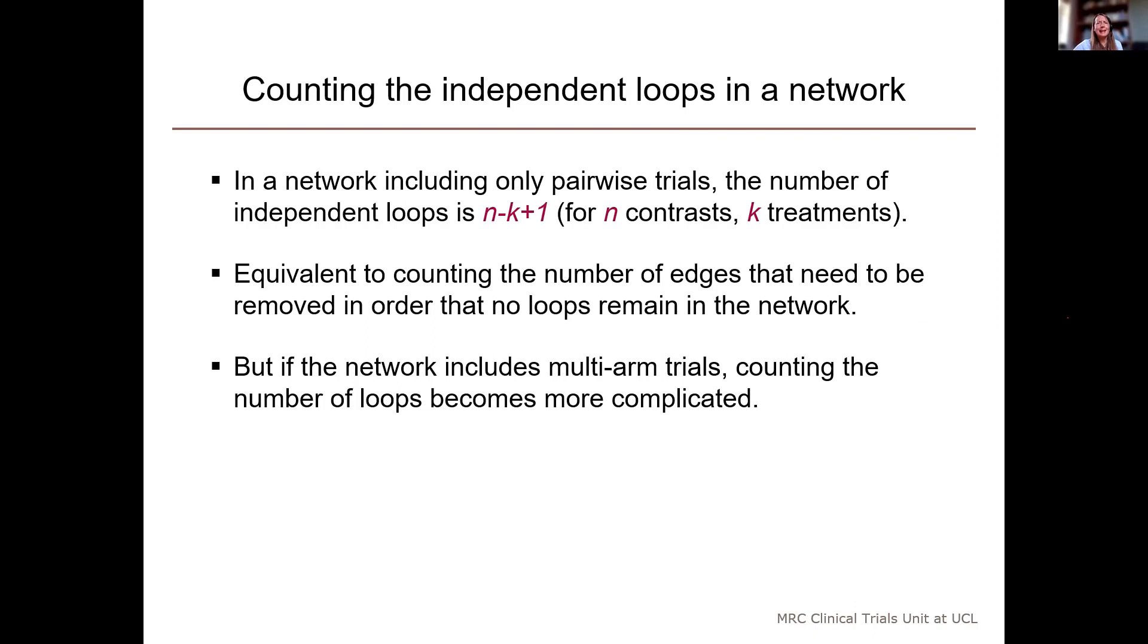It's fairly easy to count the number of independent loops, but less easy to identify which loops they are. This formula is equivalent to counting the number of edges that need to be removed in order that no loops remain in the network.